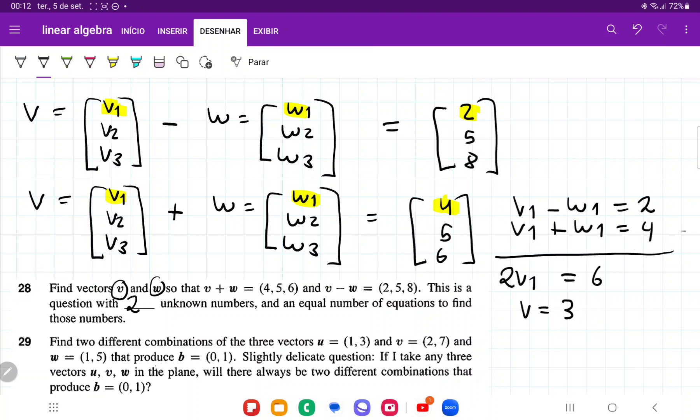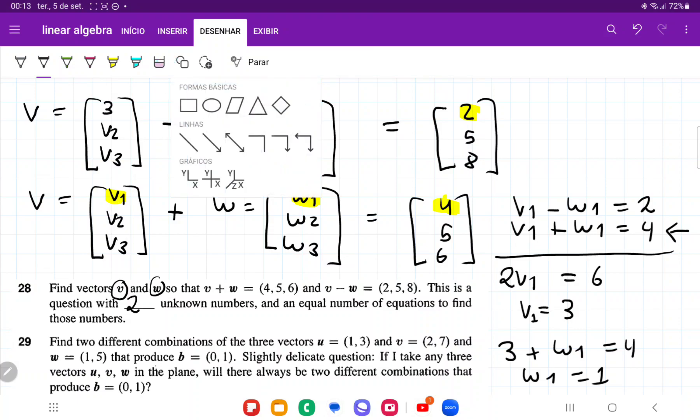If v1 equals 3, when I put it back in this equation, I have 3 plus w1 equals 4, so w1 must equal 1. Once I have found v1 and w1, I'm going to substitute these. So w1 equals 1 and v1 equals 3.